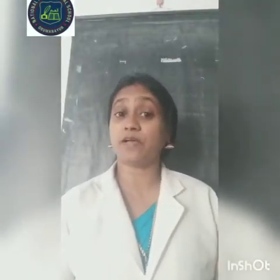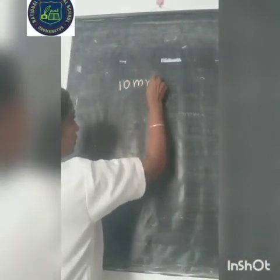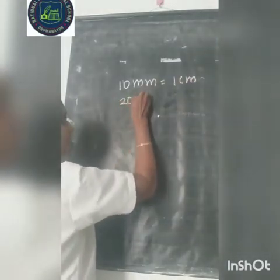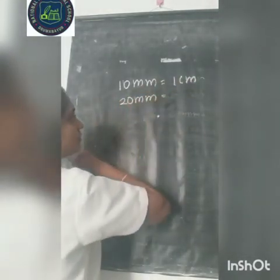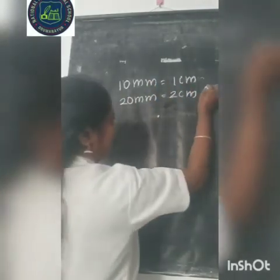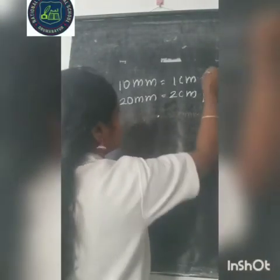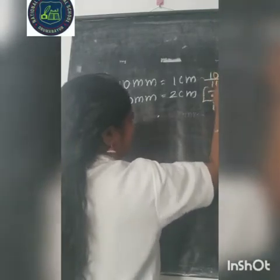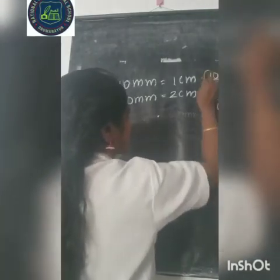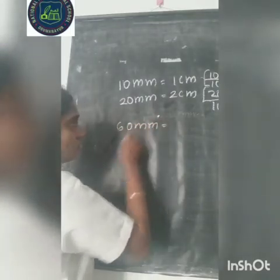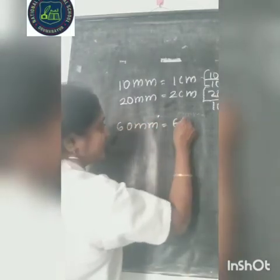Now we can study how to convert smaller units. We know that 10 millimeter is equal to 1 centimeter. And 20 millimeter is equal to 2 centimeter — we get this by 20 divided by 10 equals 2. Similarly, 60 millimeter divided by 10 equals 6 centimeter.